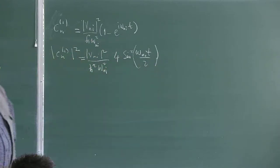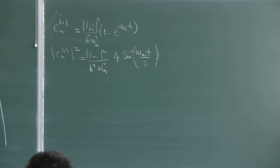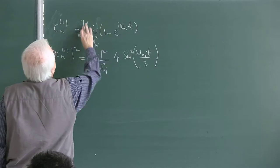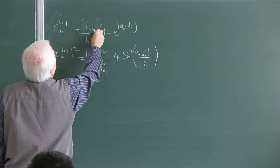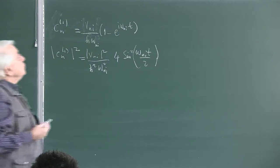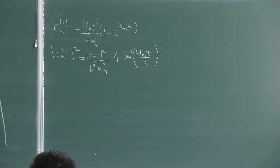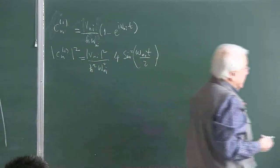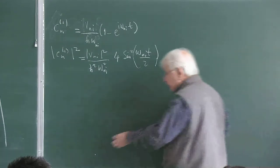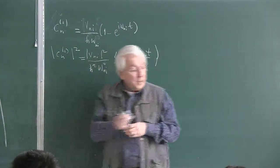This expression is going to keep us busy for a while. We have to discuss in detail what it means—it's going to teach us a lot. Let's focus on the profile, which I take to be sine²(omega_{ni} T / 2) divided by (omega_{ni}/2)², as a function of omega_{ni}. Let's plot this figure. It is an even function, so we look at the graph in both positive and negative parts.